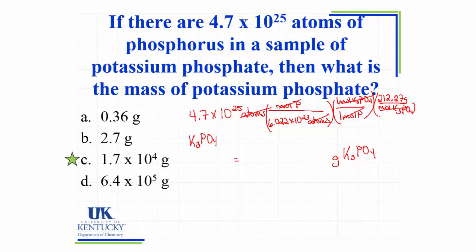So now I just need to do my calculation. I take 4.7 times 10 to the 25th times 212.27 and divide it by 6.022 times 10 to the 23rd, because all of my ratios here were with the value of 1. I get 16,567 grams, but I notice that I have 5 digits and I can only have 2 significant figures in my answer. So I need to round this and write it in scientific notation: 1.7 times 10 to the 4th grams of potassium phosphate. That mass of potassium phosphate contains 4.7 times 10 to the 25th atoms of phosphorus.